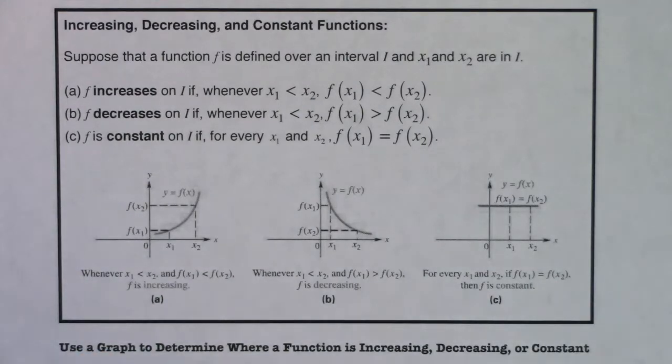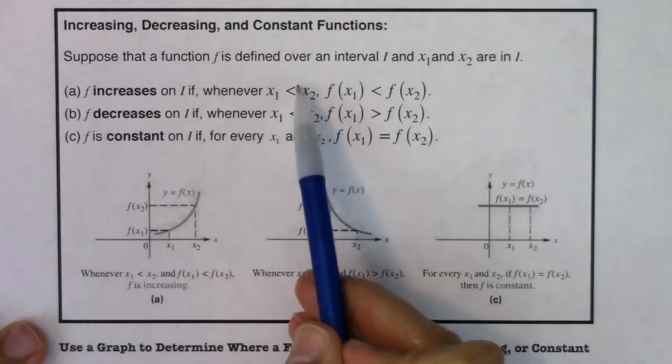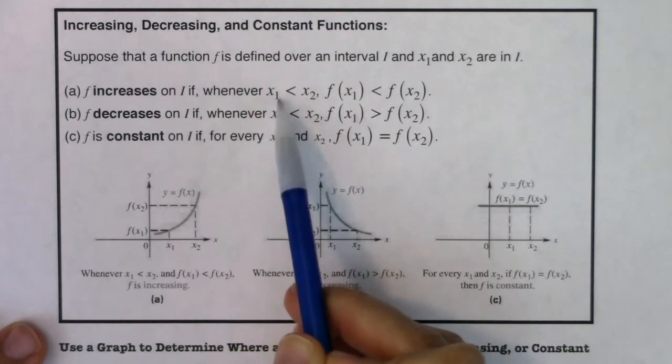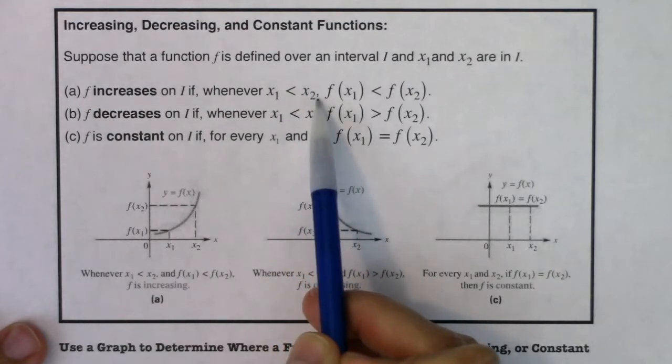That might not make a whole lot of sense, but let's really start to unpack it. And I want to focus in just right here on this first expression. What does it mean for x sub 1 to be less than x sub 2?